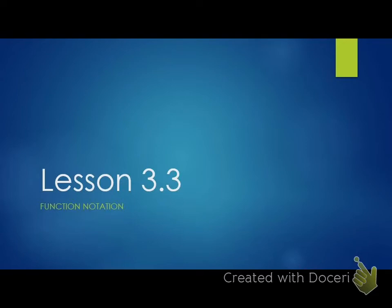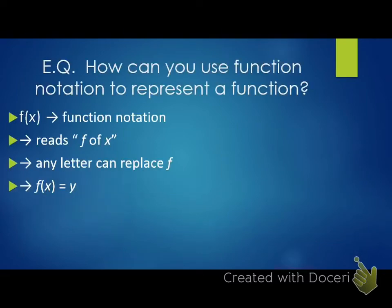So in function notation, first things first, we got to understand what that is, what it looks like. Our essential question today is: how can you use function notation to represent a function? Mini-review, because it's a good thing to review before a new lesson. Also, you have a quiz tomorrow. We learned last week the definition of a function. For every input, there is exactly one output. So if I put one value into a function and only one number comes out, it is indeed a function.